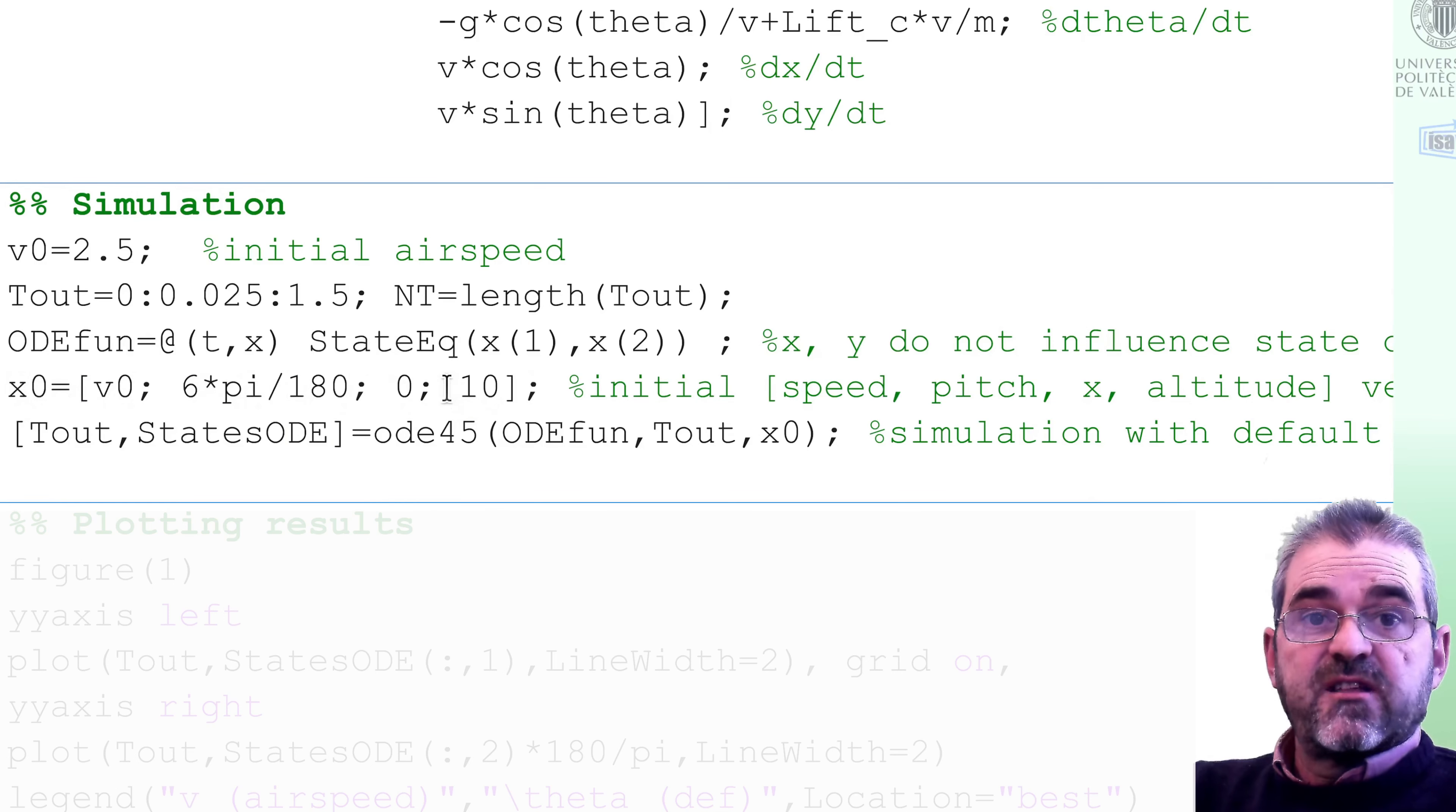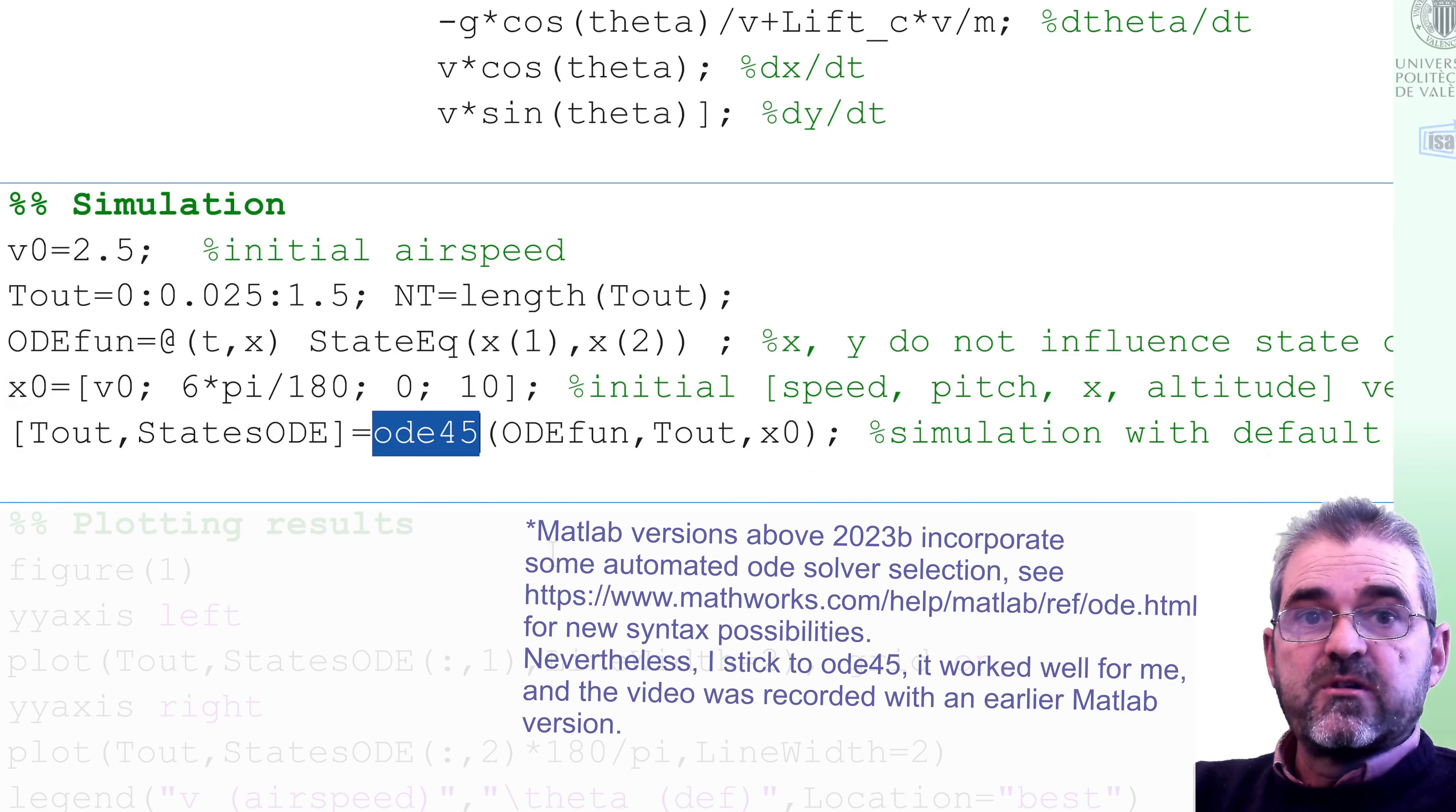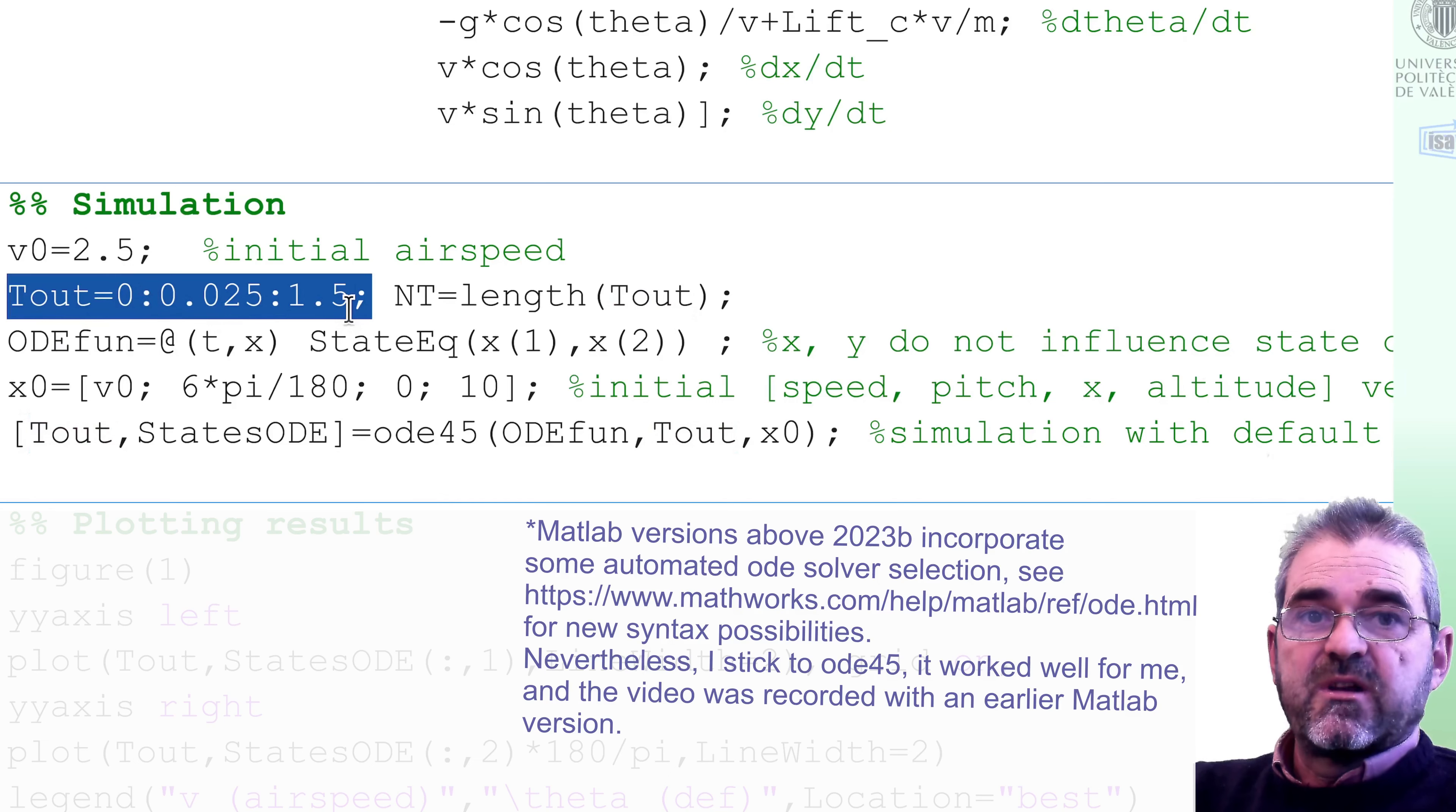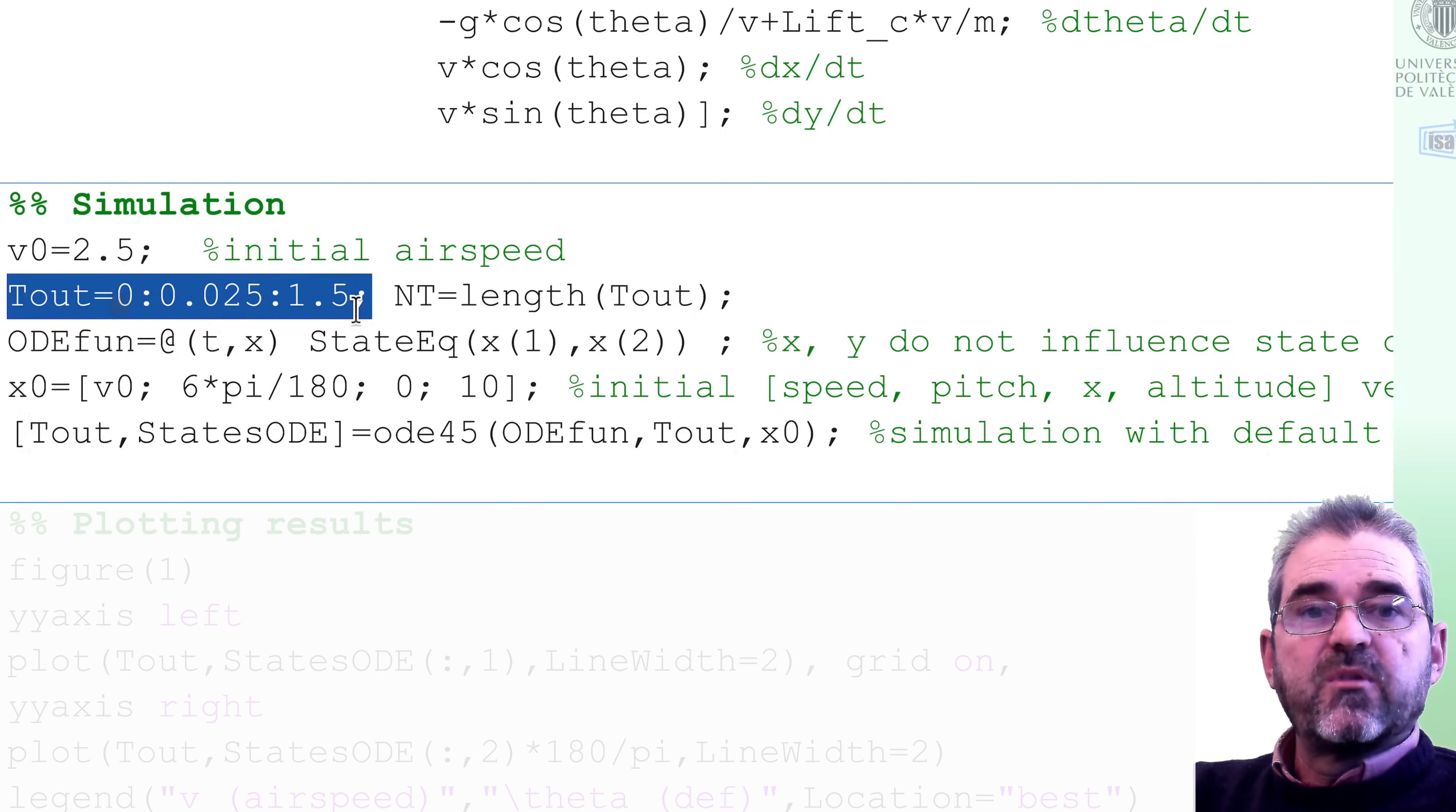And once I have that initial condition vector, that will be the last argument to ODE45, which is the numerical integration code we will use from MATLAB. As we are not putting any tolerance related argument, we will use default tolerances. ODE45 needs also the time I wish to simulate the system. The output will be this vector of time instances. So I will simulate from 0 to 1.5 seconds.